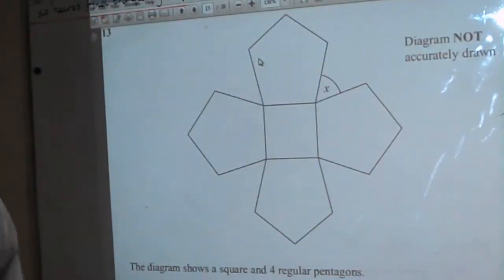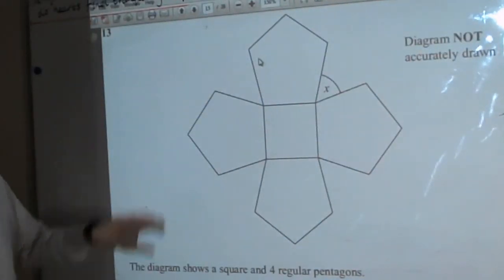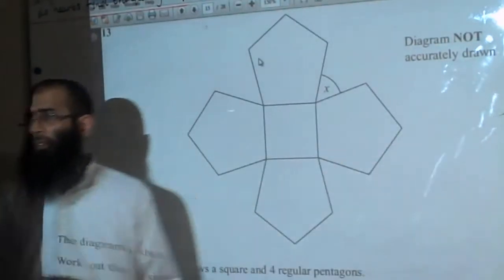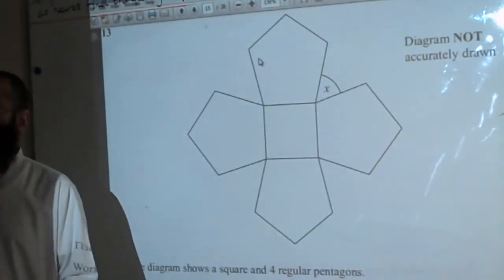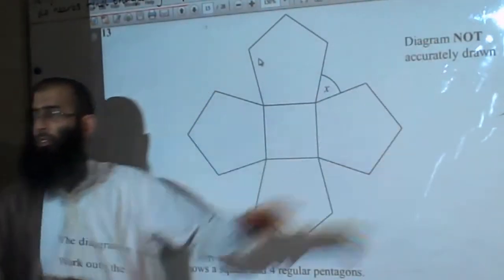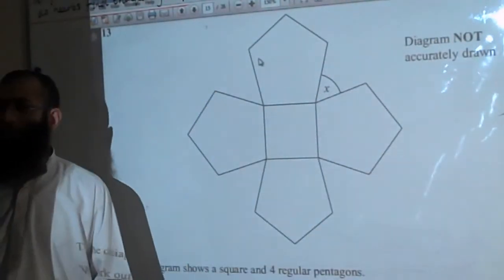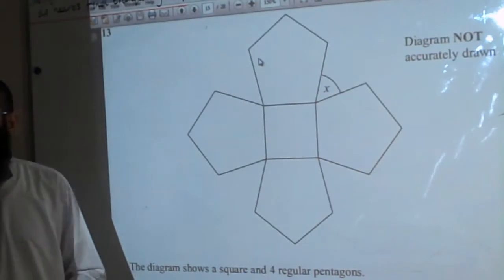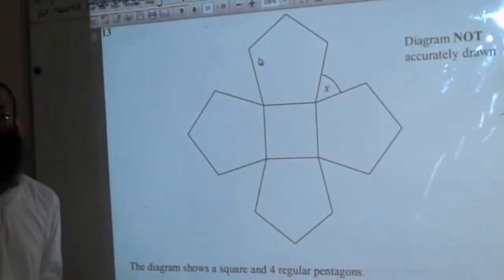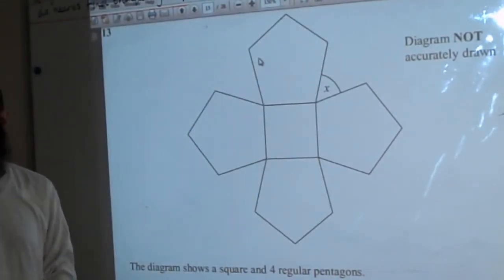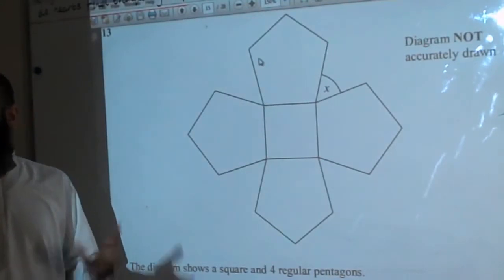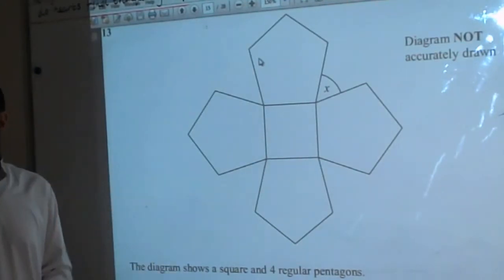Question number 13. The diagram is not accurately drawn, and that's a reason students think they're smart — they get their protractors and start measuring the angle, thinking they've done it in 2 seconds.